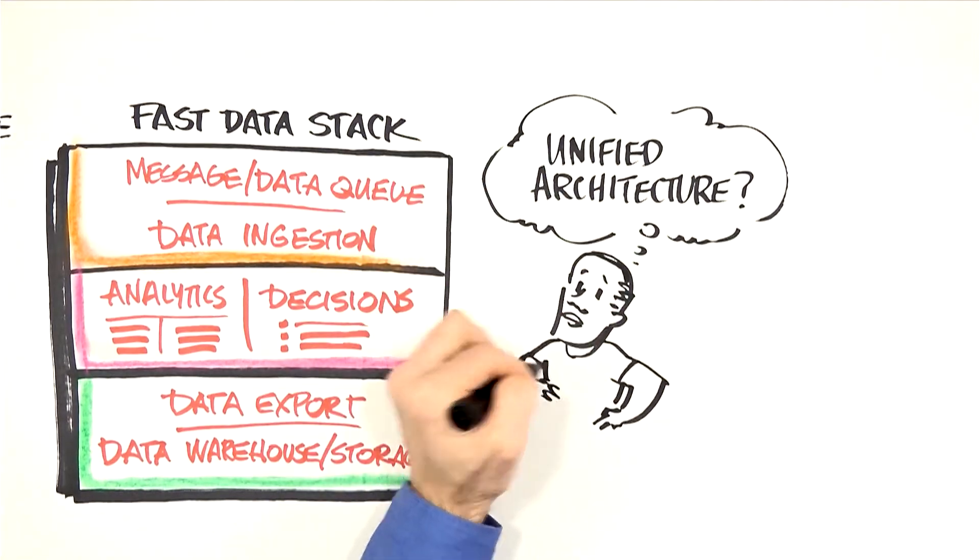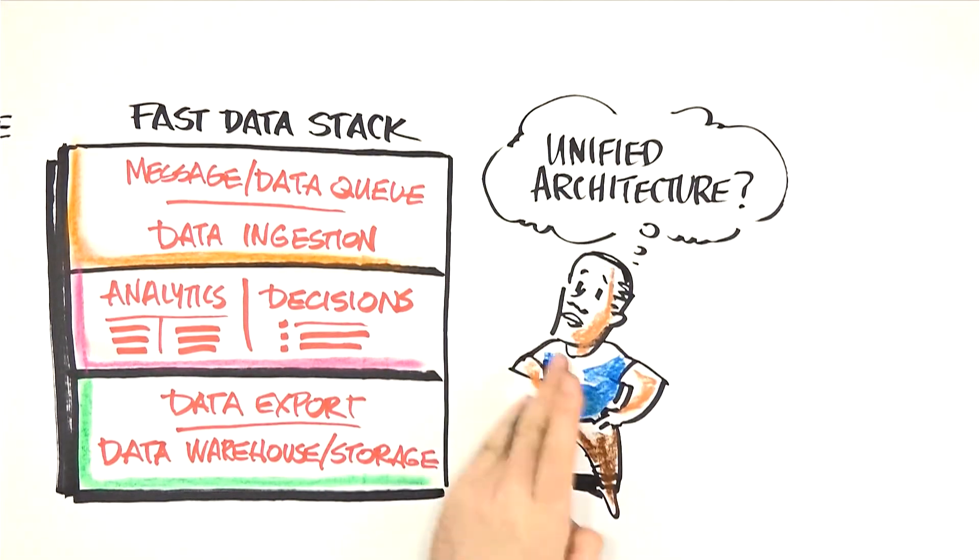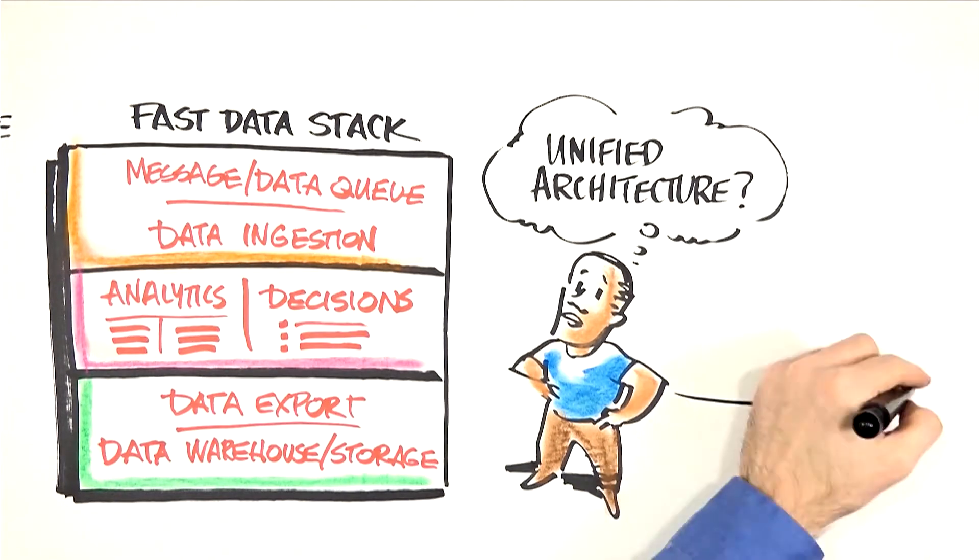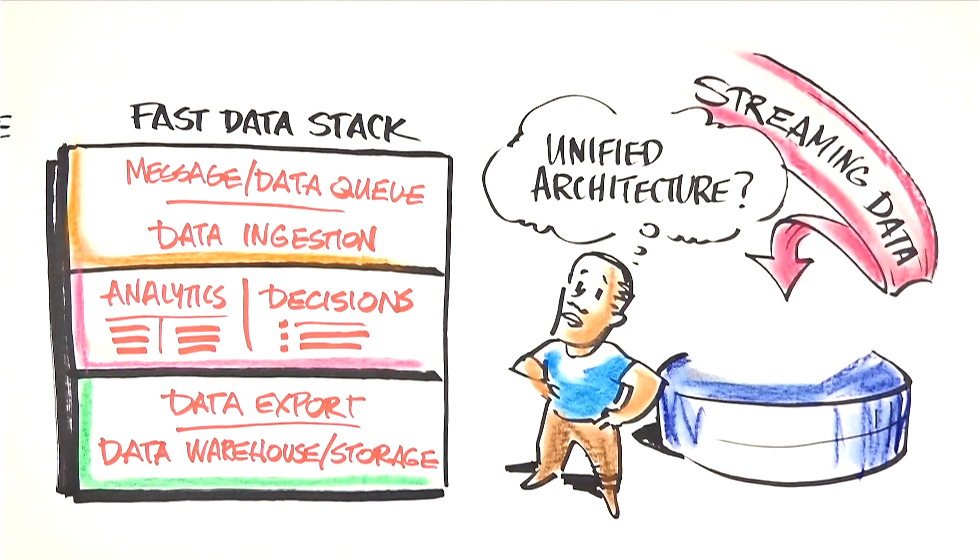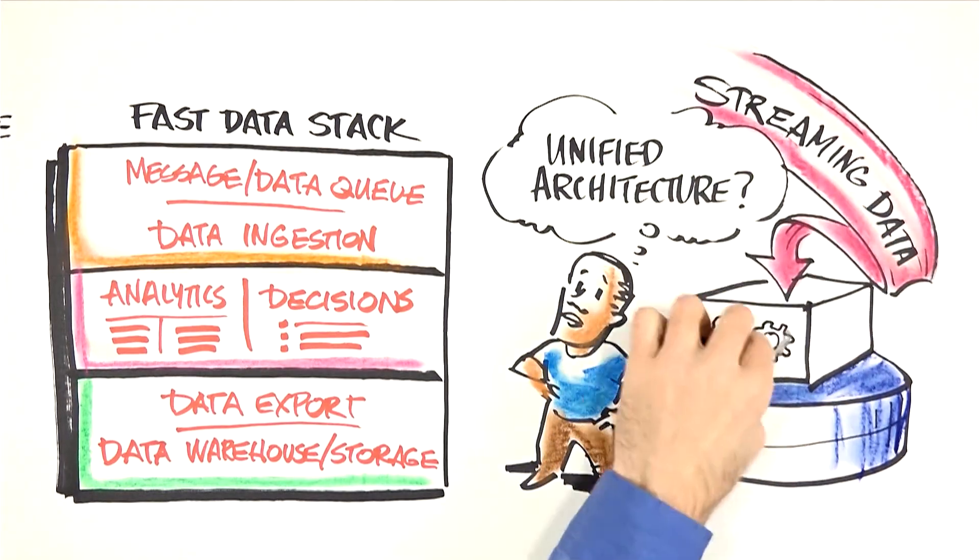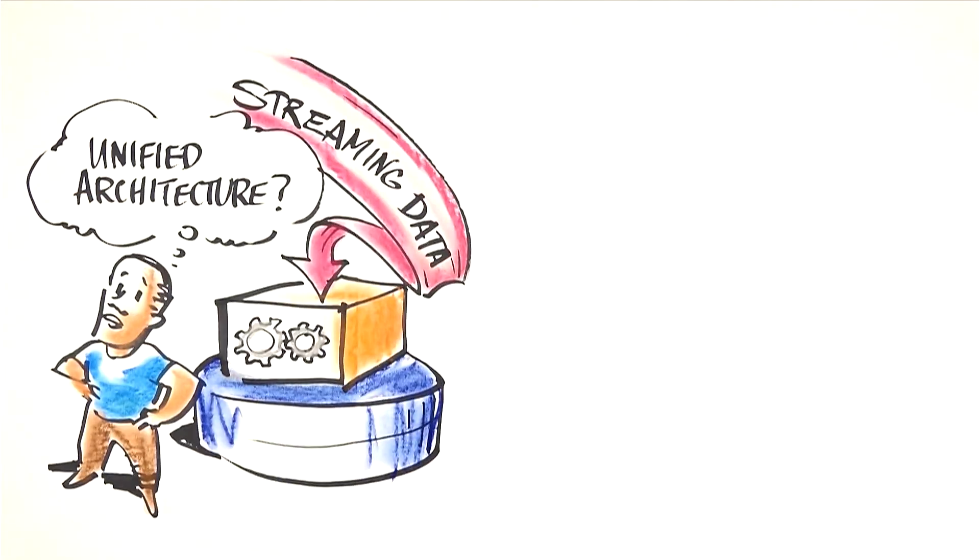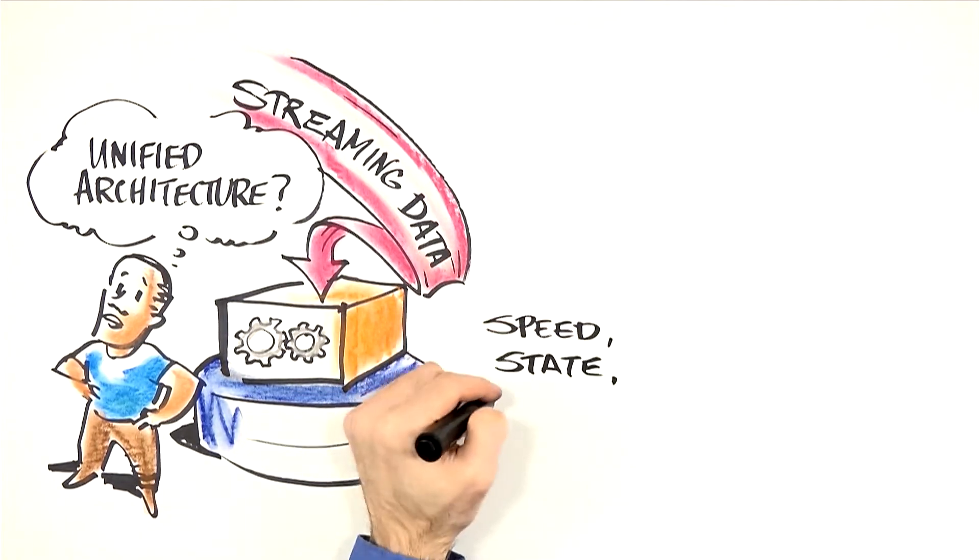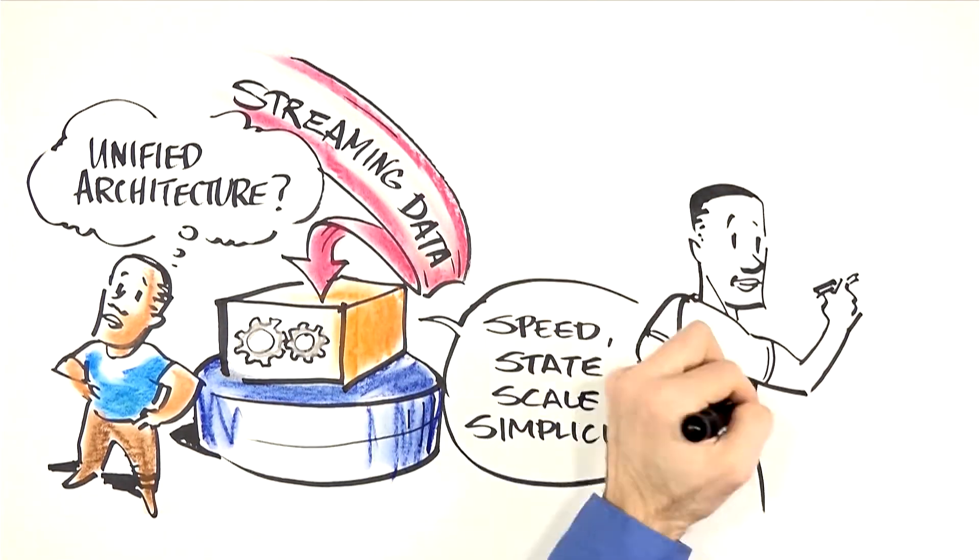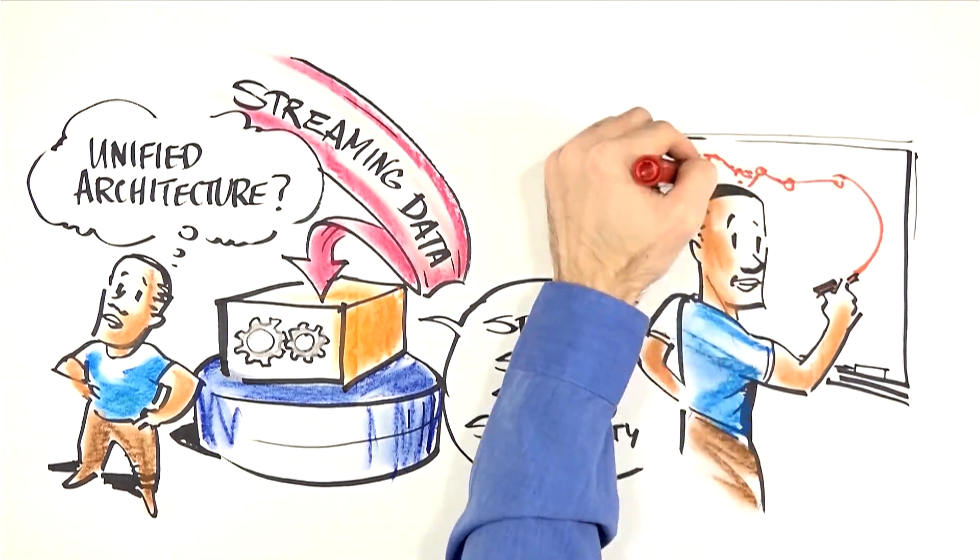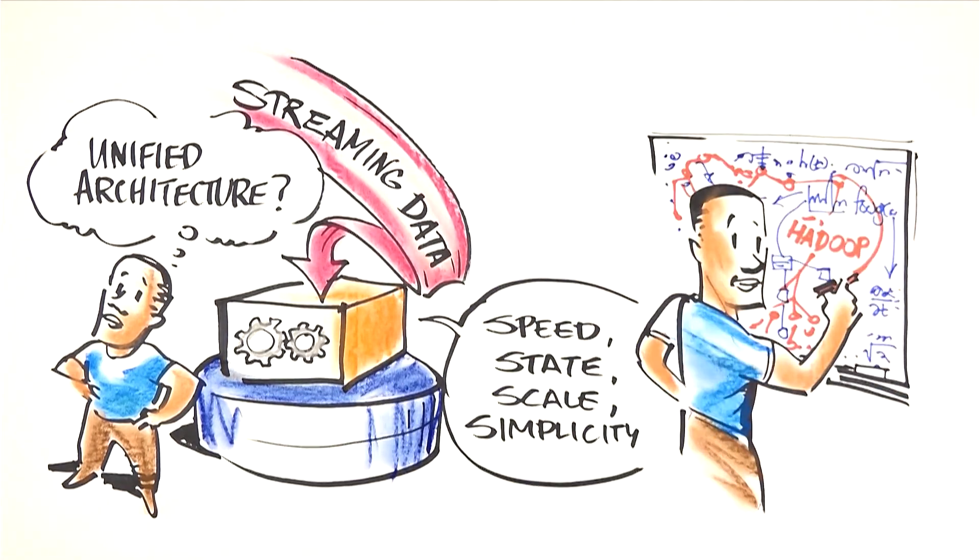Streaming solutions are just one part of the solution. But today, OLTP databases are fast enough to process streaming data in real-time with analytics and decision-making. You get speed, state, scale, and simplicity. Wouldn't you rather spend your time building your application than assembling the infrastructure to enable it?